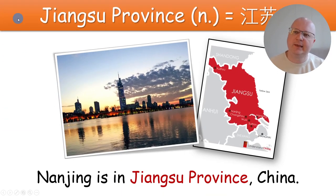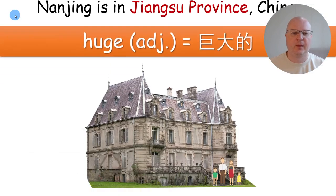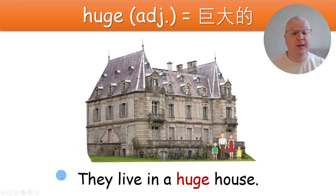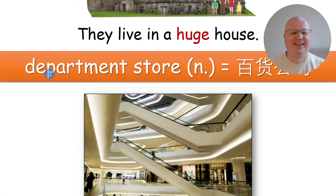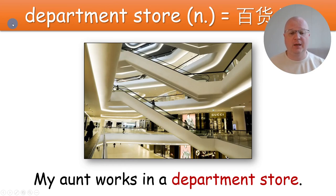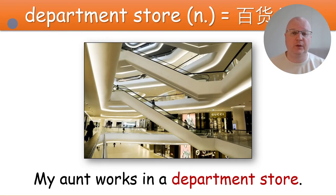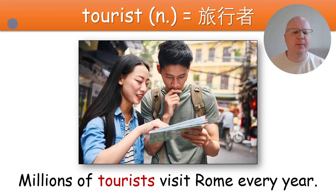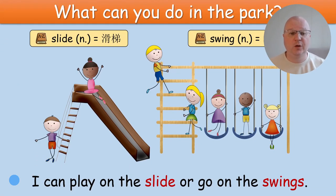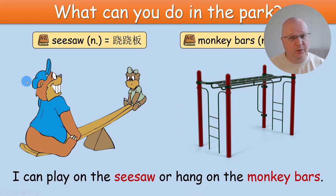Jiangsu Province — Nanjing is in Jiangsu Province, China. Huge — They live in a huge house. Department store — My aunt works in a department store. Tourists — Millions of tourists visit Rome every year. What can you do in the park? I can play on the slide or go on the swings. What else can you do in the park? I can play on the seesaw or hang on the monkey bars.